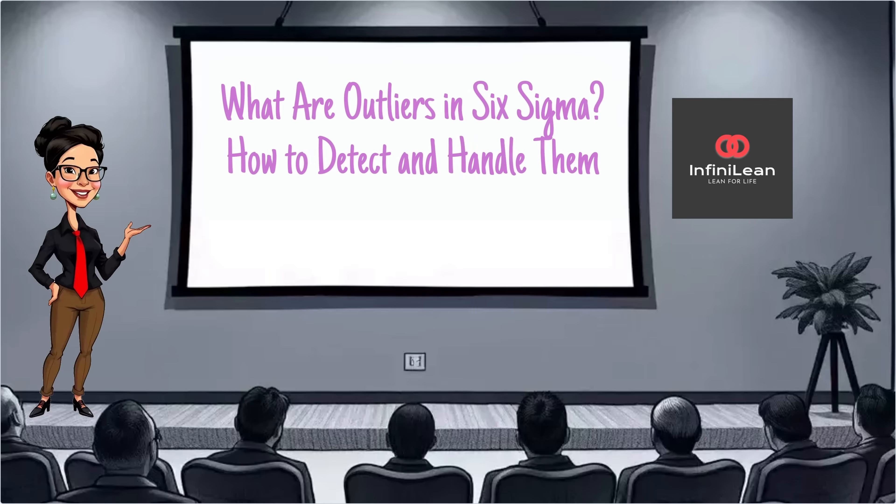Let's begin by understanding what outliers are. In statistics, outliers are data points that differ significantly from others in a data set. They can skew your results, lead to false conclusions, and affect the quality of your output.